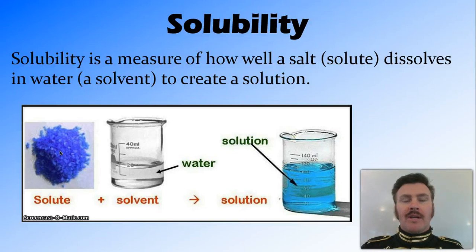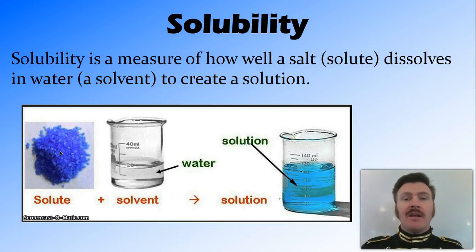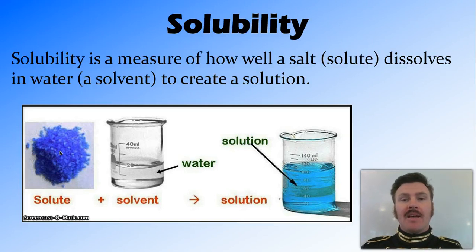So firstly, what is solubility? Solubility is whether a salt — and remember when we say a salt, we mean any ionic compound — can dissolve in a solvent. Usually the solvent is water, but it can be other things. You can have solubility in ethanol, for example.